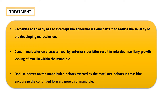When it comes to treatment, recognizing this malocclusion at an early age will aid in intercepting the abnormal skeletal pattern and reducing the severity of the developing malocclusion. These malocclusions are characterized by anterior crossbites resulting from retarded maxillary growth, where the maxilla is locked within the mandible. The occlusal forces on the mandibular incisors exerted by the maxillary incisors in crossbite encourage continued forward mandibular growth. Therefore, it is better to intercept and treat the patient at a younger age.